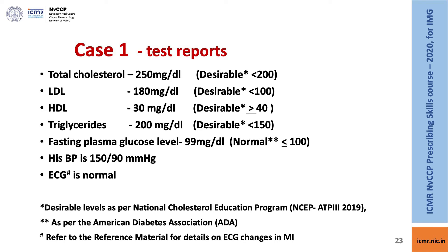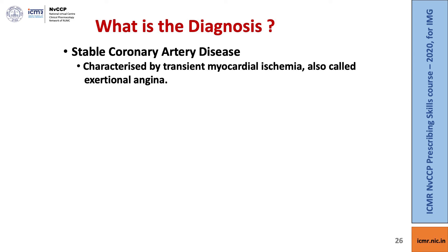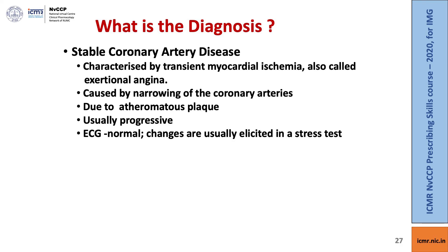Here are the test reports that came. Cholesterol is elevated. So is LDL. HDL is lower than desirable. Triglycerides are elevated. Fortunately, the plasma glucose is within normal limits. Blood pressure is on the higher side. ECG is normal — ECG would be normal in a case like this. We refer you to the reference material for details on ECG changes in myocardial infarction. The diagnosis is straightforward stable coronary artery disease, characterized by transient myocardial ischemia, also called exertional angina. It's caused by narrowing of the coronary arteries due to atheromatous plaque, which is usually progressive. ECG is usually normal, and changes, if any, are usually elicited in a stress test.